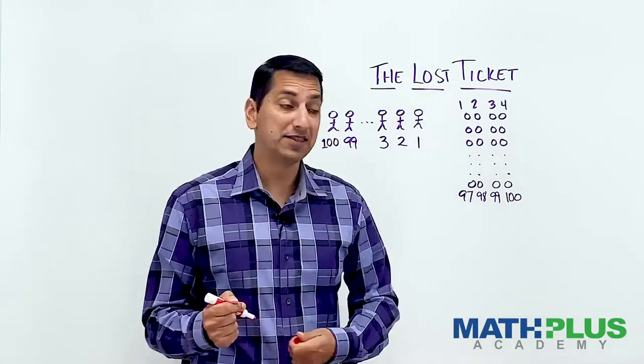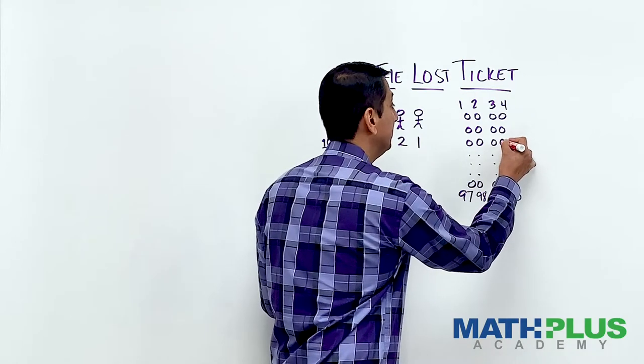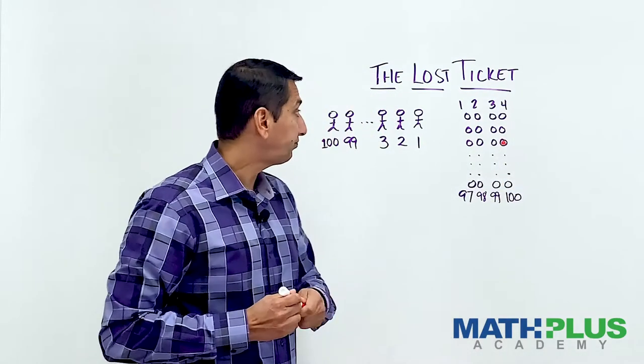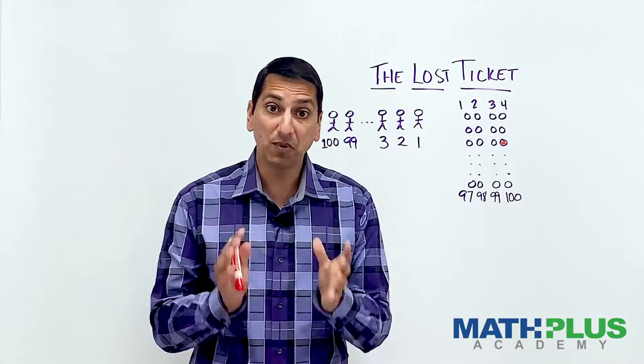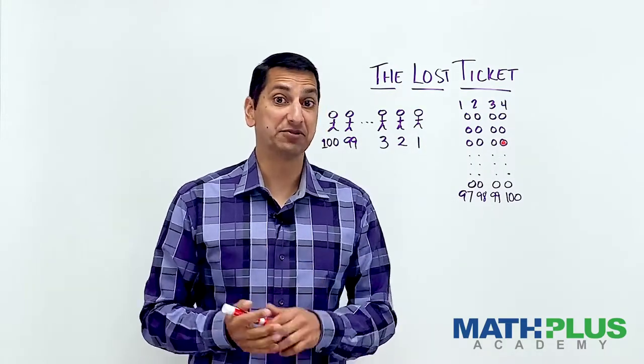So maybe this person boards the plane and chooses this seat right here. That is seat number 1, 2, 3, 4, 5, 6, 7, 8. That is seat number 12. That's not their seat, but they chose that seat.